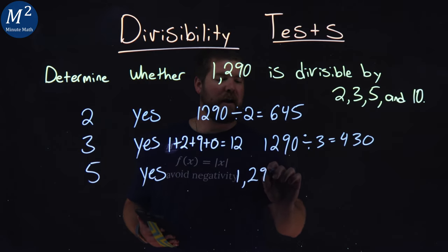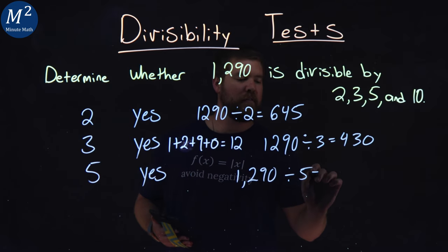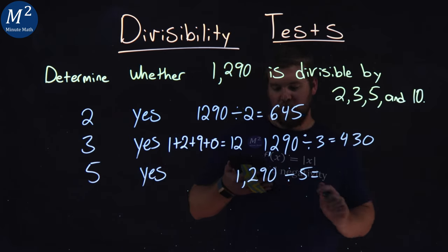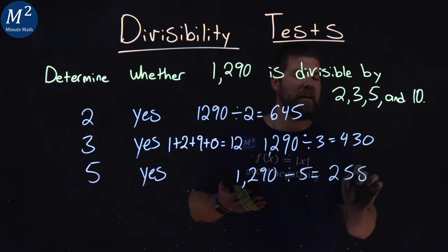And 1,290 divided by 5 is 258, if we check it out.